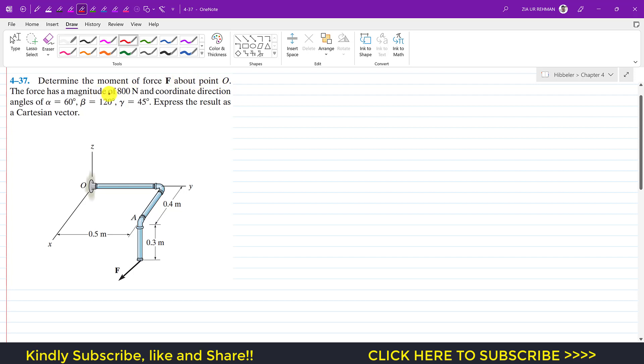The force has a magnitude of 800 Newtons and coordinate direction angles: alpha is 60 degrees, beta is 120 degrees, and gamma is 45 degrees. Express the result as a Cartesian vector.